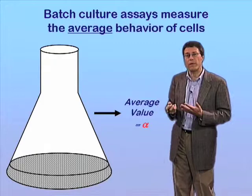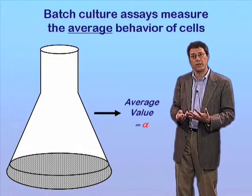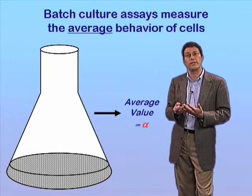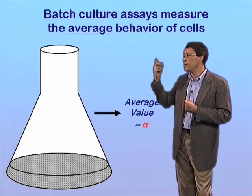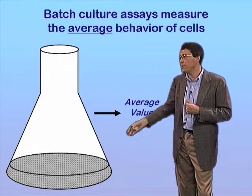This bi-stability of the population, where simultaneously in a clonal population two very different cell types can coexist, underscores the inadequacy of the traditional approaches that many of us have been taking to study phenomena in microbiology and cell biology, based on averaging the behavior of cells using what I call batch culture methods.